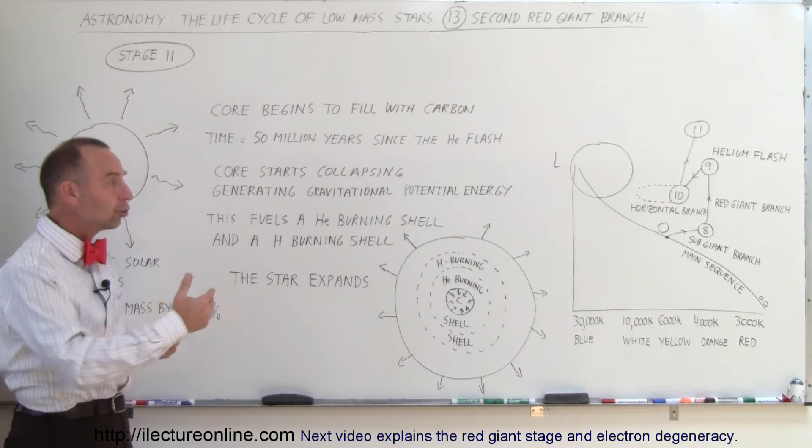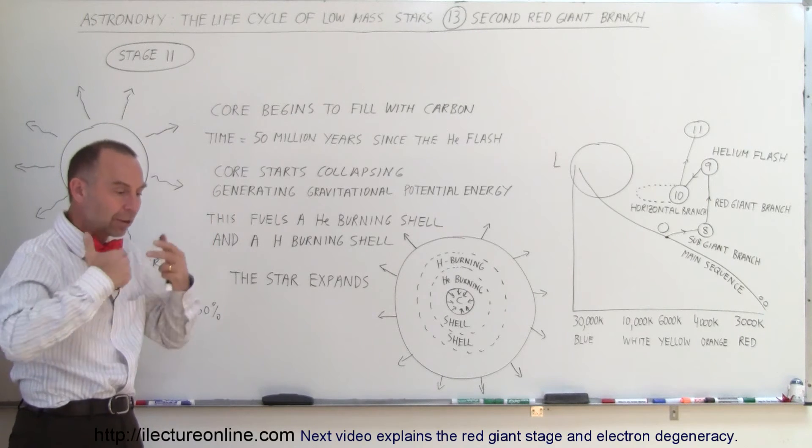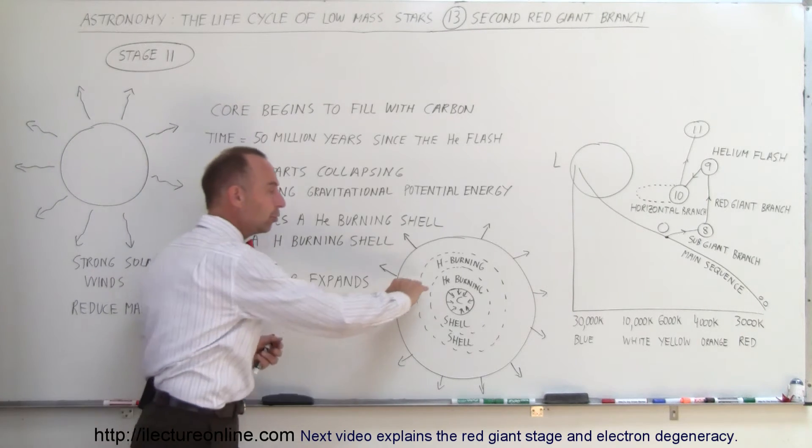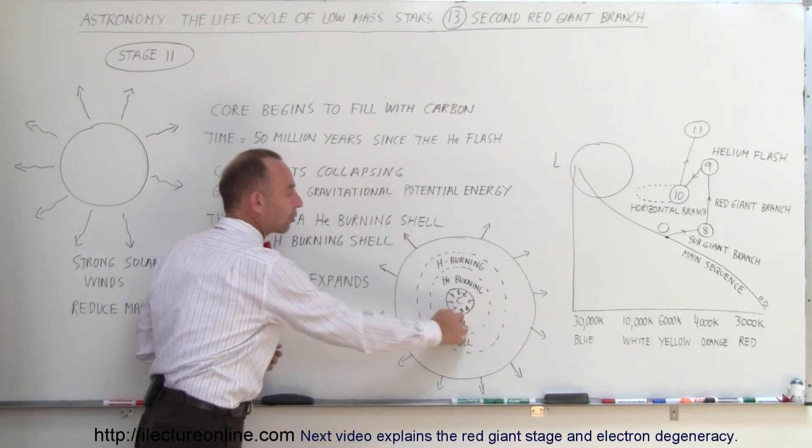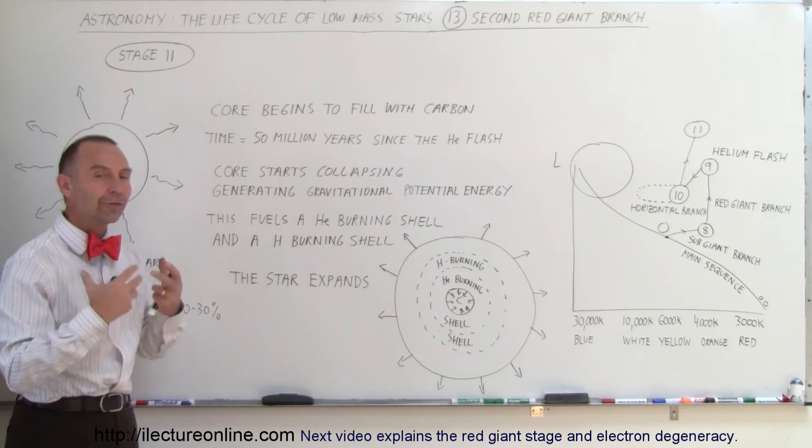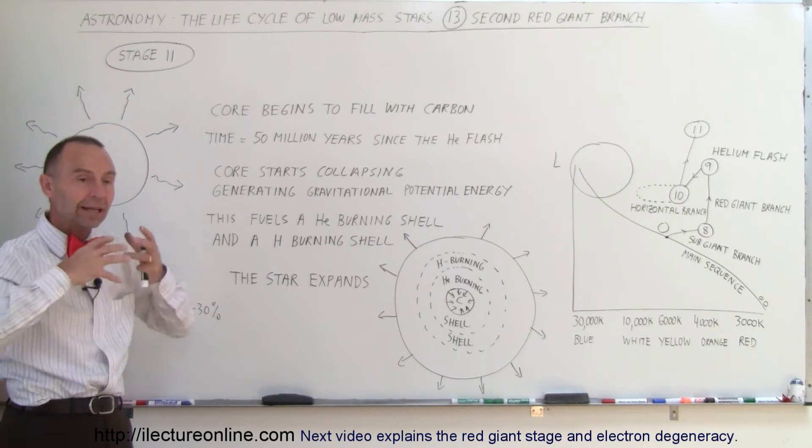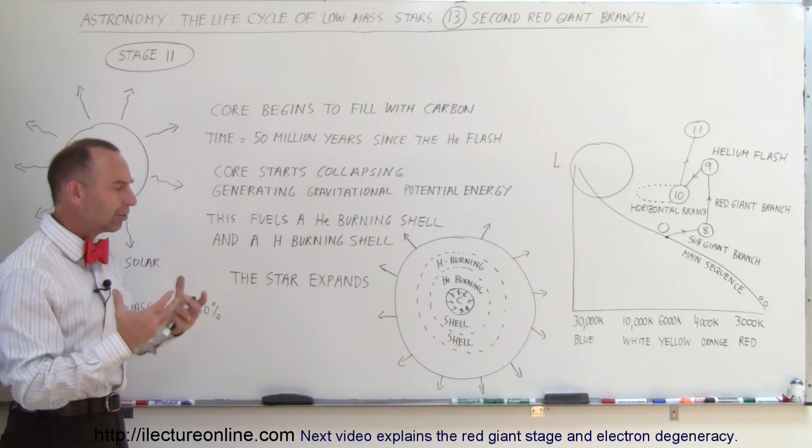That heat generated due to the gravitational potential energy being converted to heat fuels the helium burning shell around the core and the hydrogen burning shell around the core. That is still ferociously taking place because the energy being generated from the core collapsing creates all that extra heat.